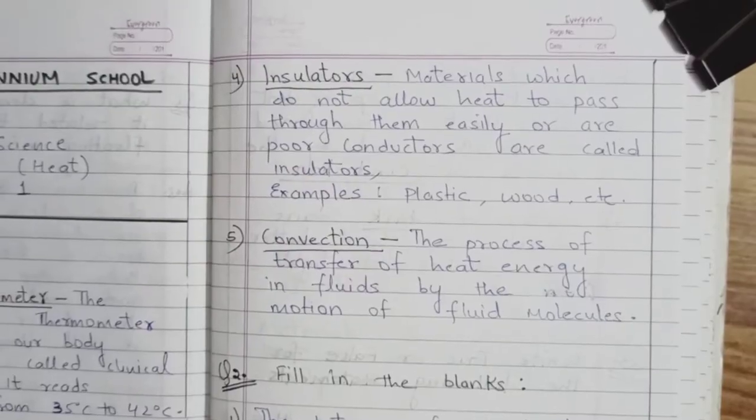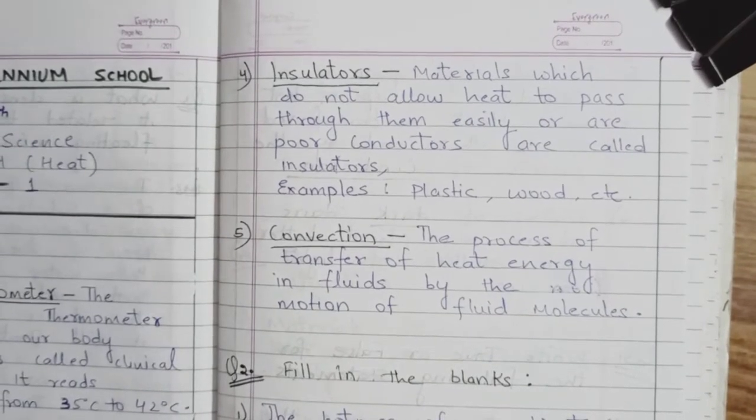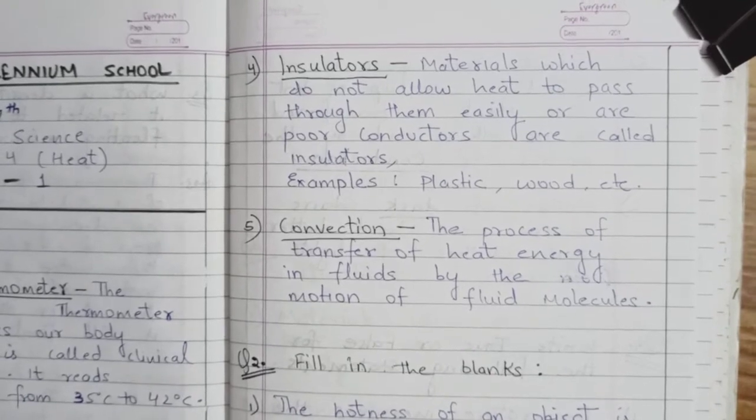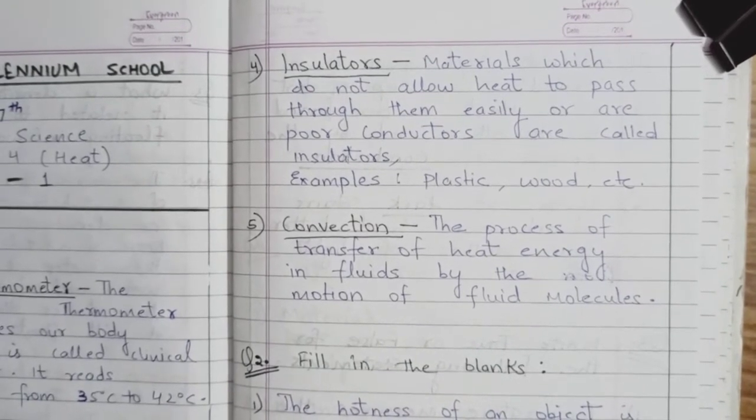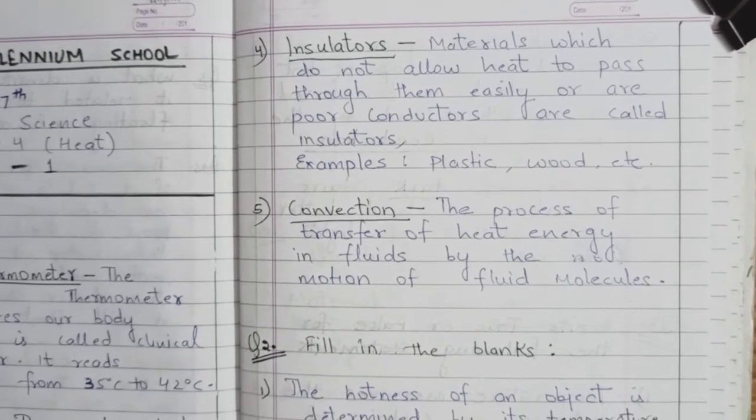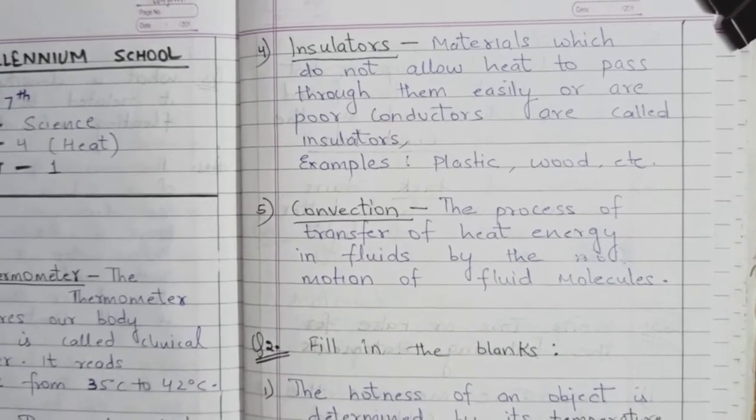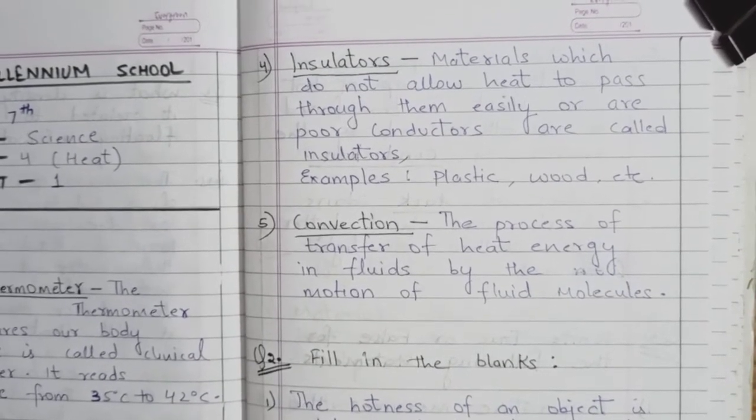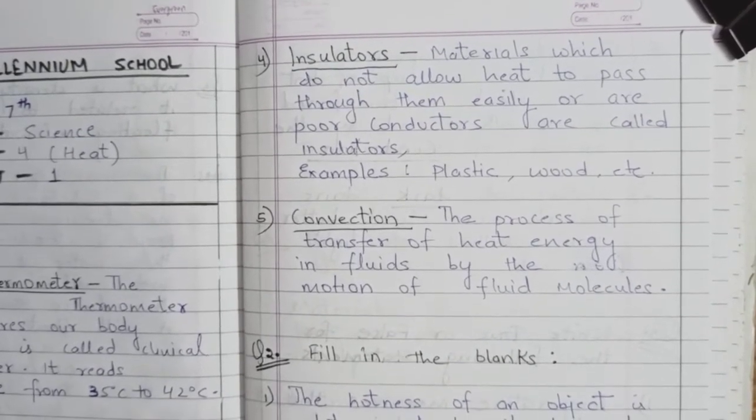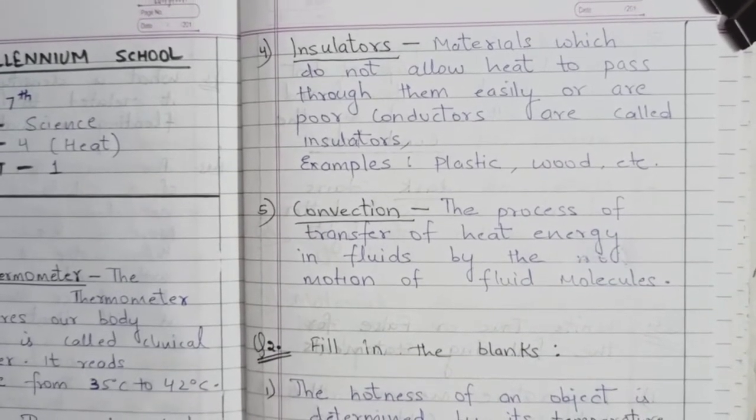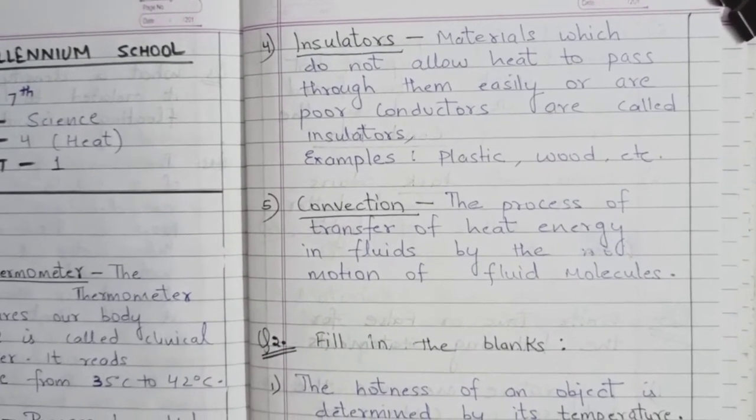Fourth is insulators. Materials which do not allow heat to pass through them easily are poor conductors, or are called insulators. For example, plastic and wood are insulators which do not allow heat to pass through them easily.